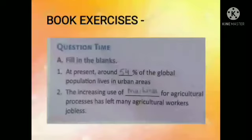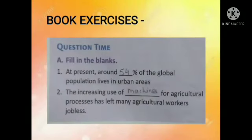First of all, let us do fill in the blanks, which is given in your book on page number 42. First one: at present, around blank percentage of the global population lives in urban areas — i.e. 54.